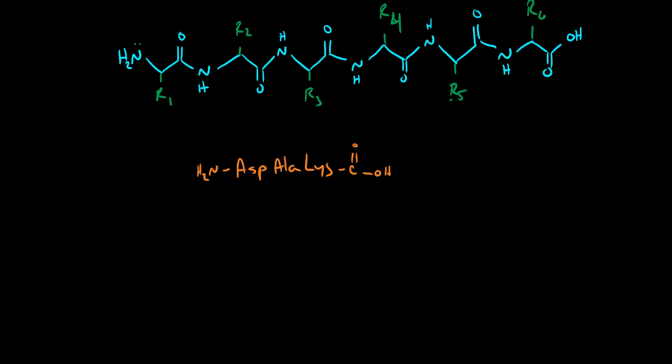So let's start off by simply drawing in the backbone. No side chains yet. Start off with your NH2. NH2, alpha carbon, carbonyl. That's the Asp. Nitrogen, alpha carbon, carbonyl. That's our alanine. Nitrogen, alpha carbon, carbonyl. This is the lysine and now we have our C terminus. This is the backbone. You have to get this right before you can get the overall structure correct.